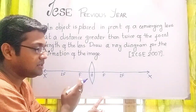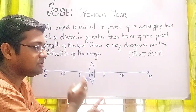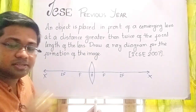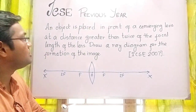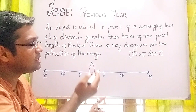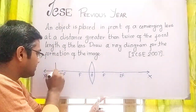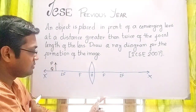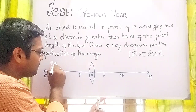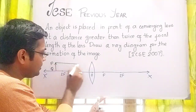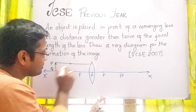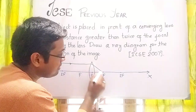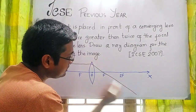Actually, the focus of the converging lens or convex lens is on the right side. According to the question, the object is placed at a distance greater than twice the focal length, somewhere here. So, a ray coming from point P, parallel to the principal axis, after refraction passes through the focus.